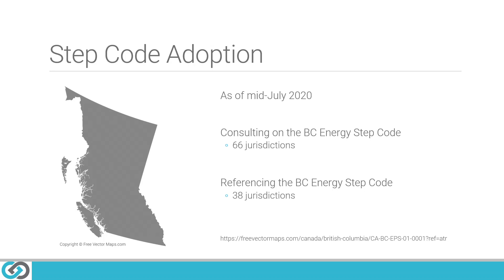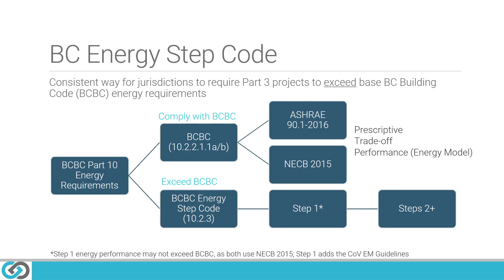As of mid-July 2020, there were 66 jurisdictions consulting on the BC Energy Step Code and 38 jurisdictions already referencing it. The Step Code was designed as a consistent way for jurisdictions to require Part 3 projects to exceed base BCBC energy requirements. There are currently two ways to comply with BCBC: using ASHRAE Standard 90.1-2016, or using the National Energy Code for Buildings, NECB 2015.